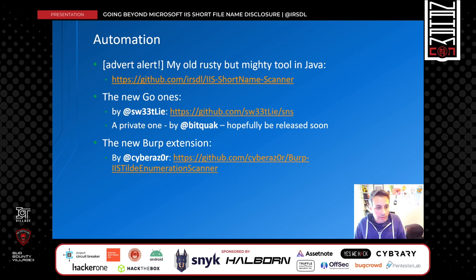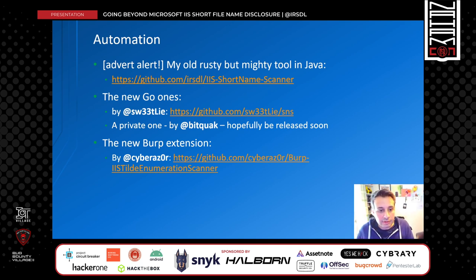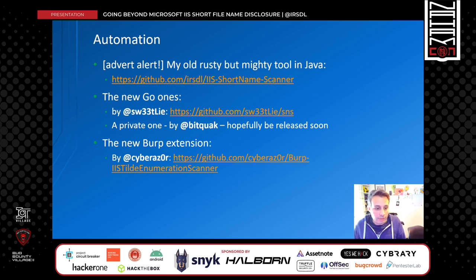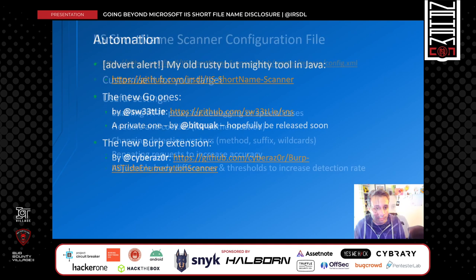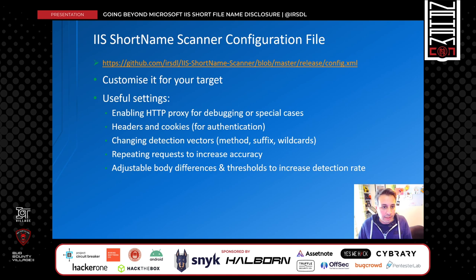How can we automate this? There are tools created for this purpose. The first is a short name scanner written in Java that I created back in 2012 — it works but it's old and may be a little slow. There are also Go-based tools created by different people, and a newer Verb extension that addresses this issue. If you're using my IIS short name scanner, I recommend reviewing its config.xml file, as you'll likely need to customize it for your target — for example adding cookies, required headers, or adjusting accuracy to prevent false positives or true negatives.